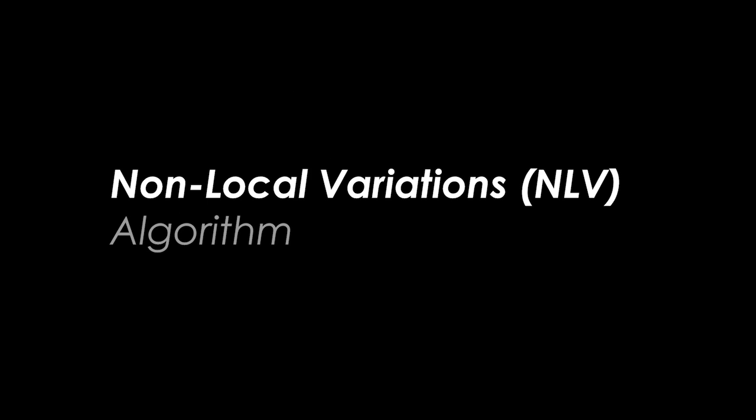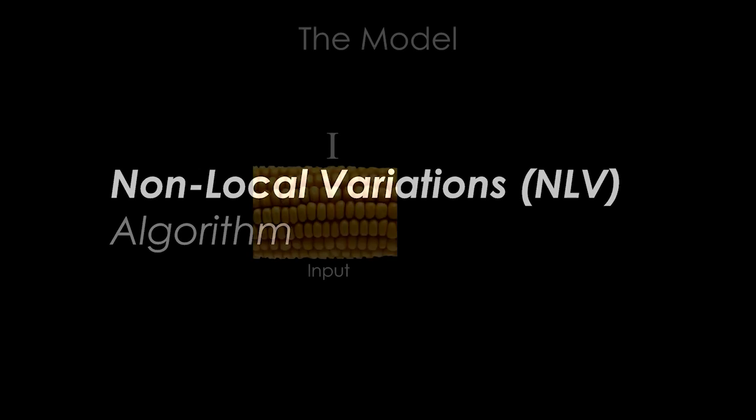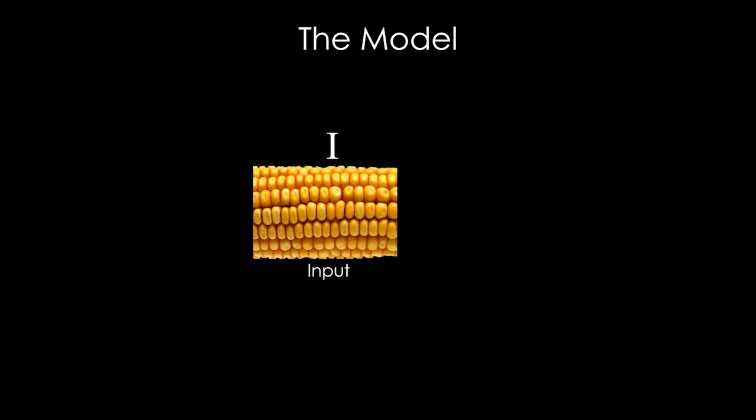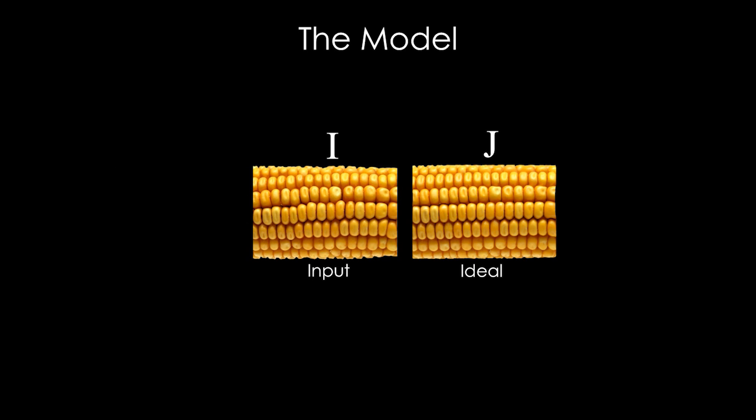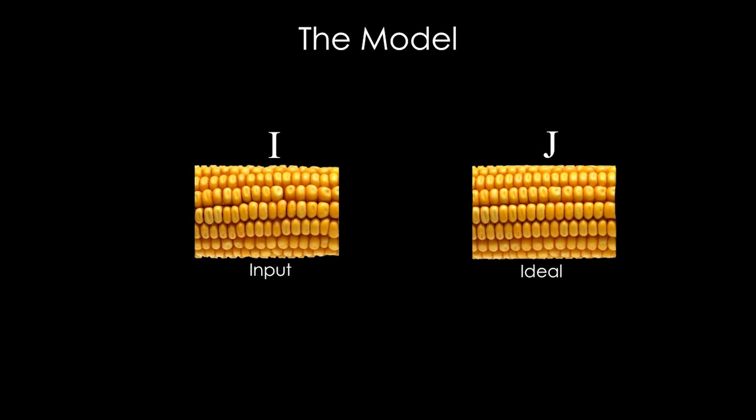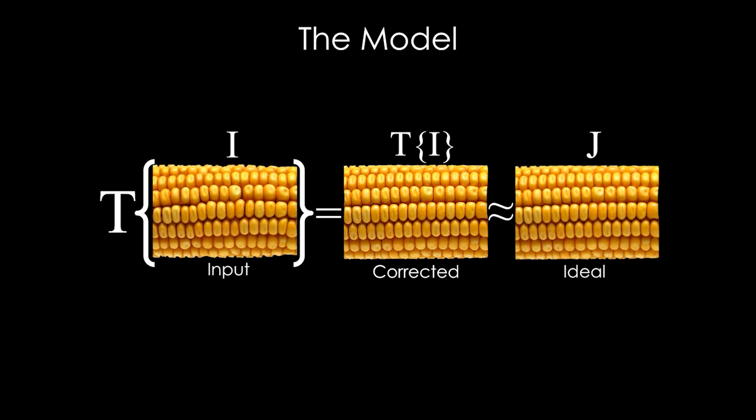Next, we describe the outline and intuition behind our algorithm. We assume that for every input image i, there is an ideal image j in which all the repeating structures are very similar to one another. Our key assumption is that by applying some transformation t on the input image, we can idealize it and bring it closer to the ideal image j.